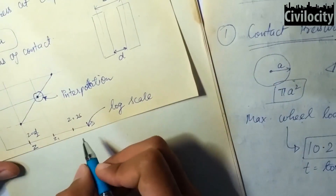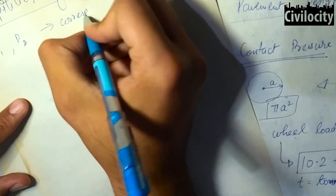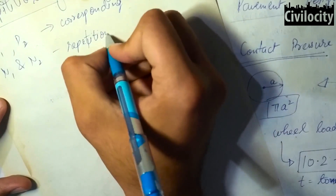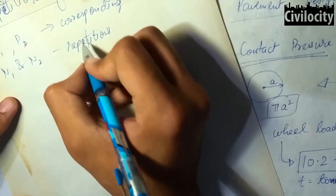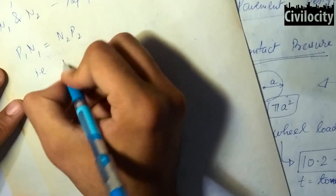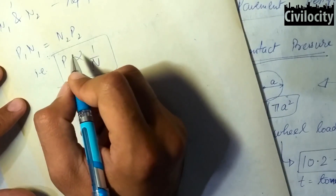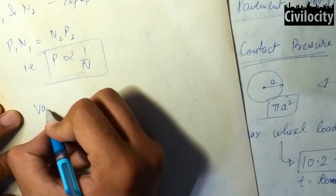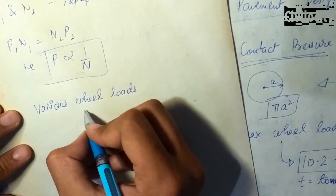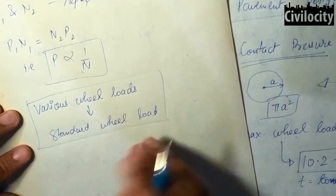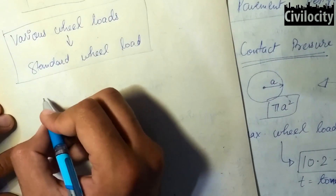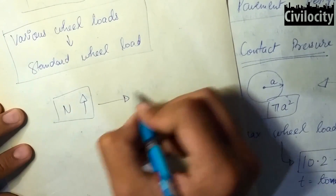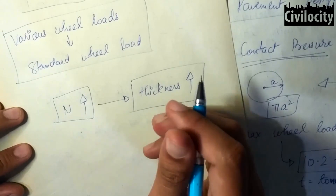Our third topic is repetitions of load. If N1 and N2 are the repetitions of corresponding loads P1 and P2, then P1·N1 = P2·N2, meaning load P is inversely proportional to the number of repetitions. Traffic composition is of mixed type, so it is essential to convert various wheel loads to one standard wheel load for structural design. Higher numbers of load repetitions during the design life require greater thickness of the flexible pavement structure.